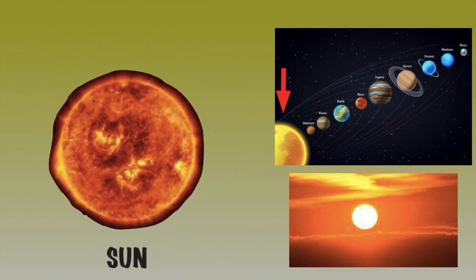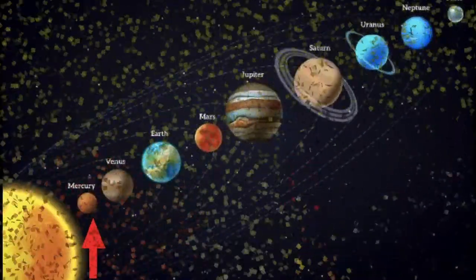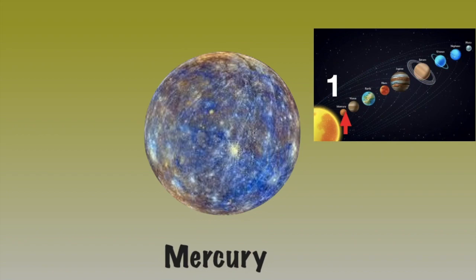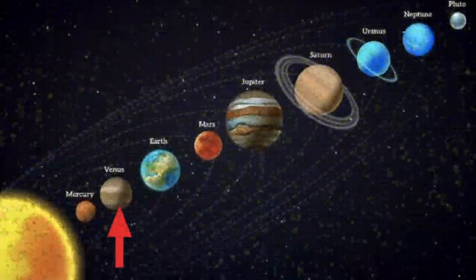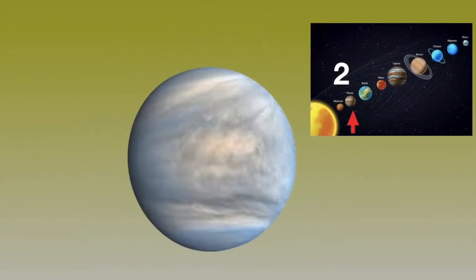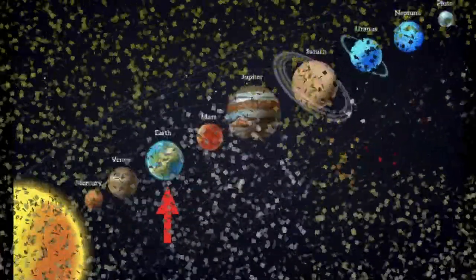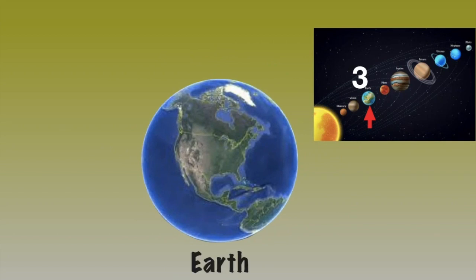Let us see one by one. First, the heart of the solar system is the Sun. The first planet revolving around the Sun is Mercury. The planet in the second orbit of the Sun is Venus, the morning star. The third planet is Earth.